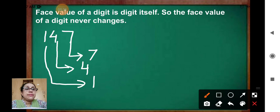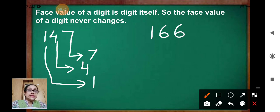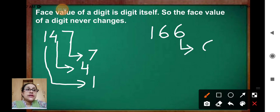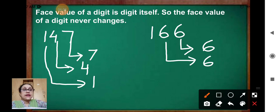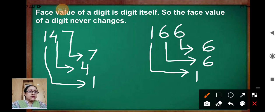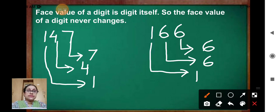One more example: 166. Tell me the face value of 6 — it will be 6, it will not change. Again, face value of this 6 will be 6. And again, face value of this 1 will be 1 only. Face value never changes. Here 6 is the face value for both the 6s.